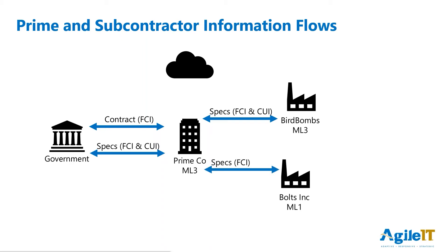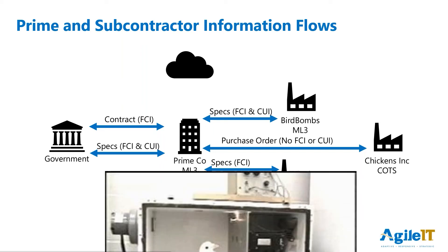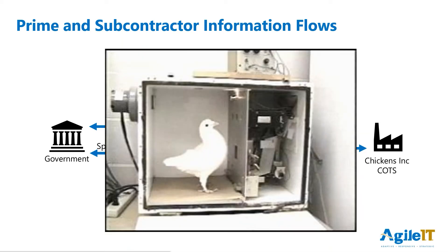Boltz can access the FCI. Meanwhile, in order to get enough chickens for the project, Primeco chooses Chickens, Inc. as their supplier. Chickens, Inc. is normally not in the defense supply chain — they're not a defense contractor. They have no certification and are considered COTS, commercial off the shelf. Primeco can still do business with them by removing the federal contract information from the equation and ordering with a purchase order. Don't laugh too hard, though — during World War II, the military did work on creating a pigeon-guided missile.